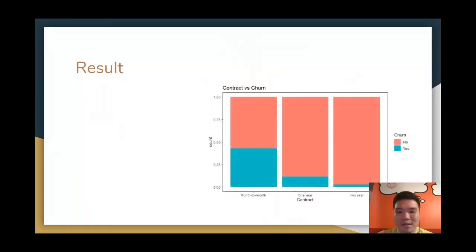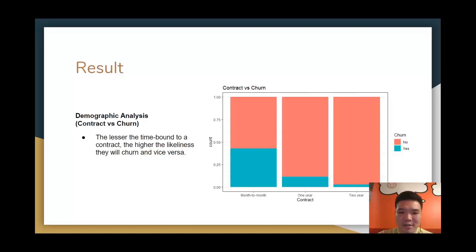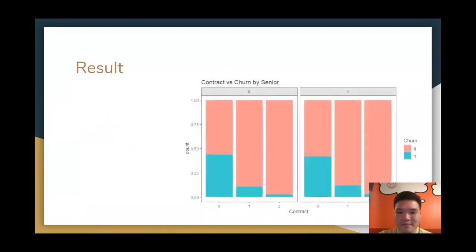Let's drill down. We have three different contracts in this data set. It seems like the lesser the time bound to a contract, the higher the likelihood there will be churn, and vice versa. After we add in one more dimension into the graph, we are able to identify they are having the same distributions between non-senior citizens and senior citizens throughout the three different contracts.